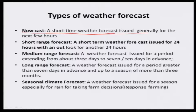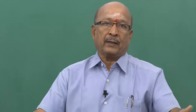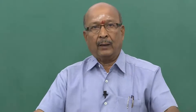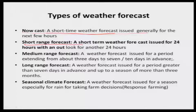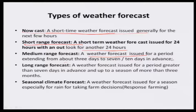The second type of forecast is short range forecast — a weather forecast issued for 24 hours. What will happen tomorrow? This is based on the model and the experience of the forecaster. It is being given for 48 hours or two days — that is short range forecast. The third forecast is medium range forecast: a weather forecast issued for a period extending from 3 days to 7 days.